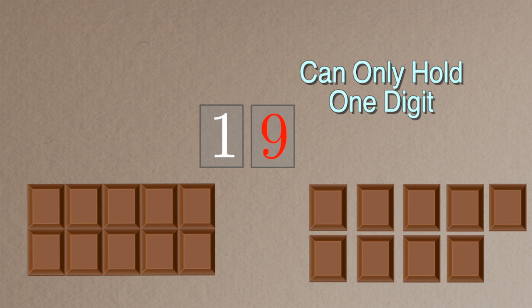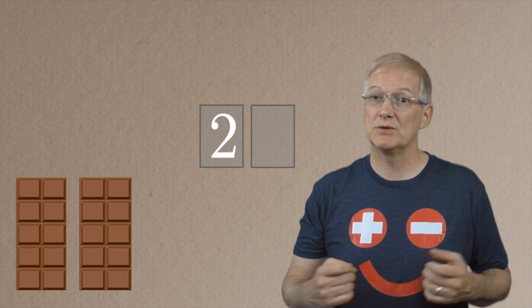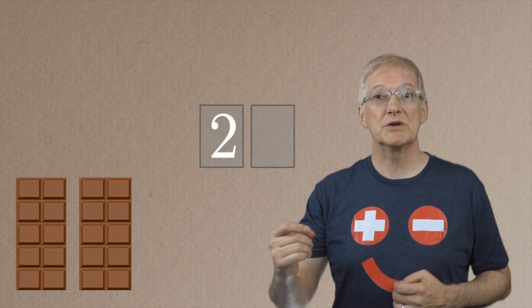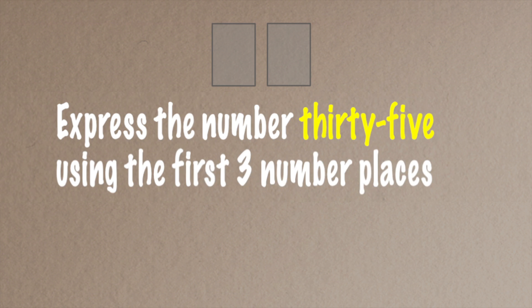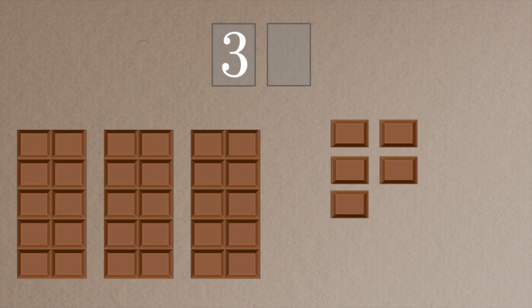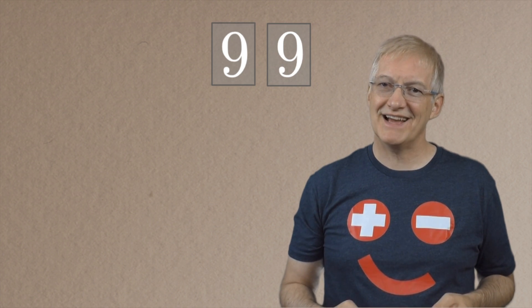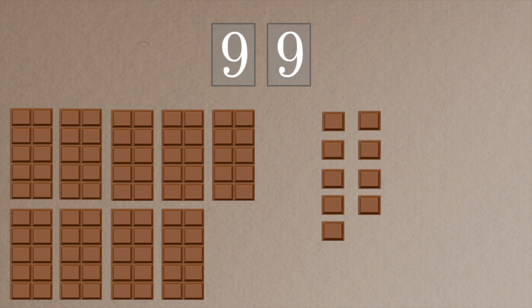So what happens when I add that extra piece? I'm going to group those 10 single pieces together into another bar of chocolate, so now I've got two groups of 10 or two bars of chocolate. I'm putting a two in my tens place, and a zero in my ones place because I don't have any pieces left over — so we've got 20 pieces of chocolate. If I have 35 pieces of chocolate I would group together the first 30 pieces into three groups of 10, putting a three in my tens place, and still have five separate pieces left over so I put a five in my ones place. The biggest number we can represent using just these two number places is 99 — nine groups of 10 and nine single pieces left over.